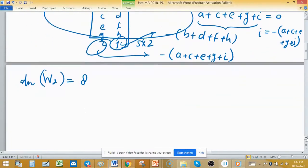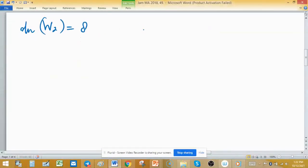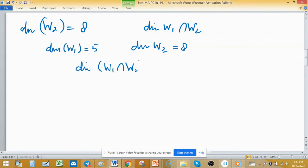Dimension of W2 is 8 and we need to find dimension of intersection, means dimension of W1 intersection W2. Recall one point: as the dimension of W1 is 5 and dimension of W2 is 8, so dimension of intersection must be less than or equal to minimum value of 5 and 8. It means that dimension of intersection at most 5.